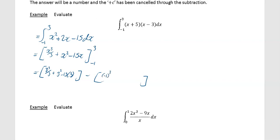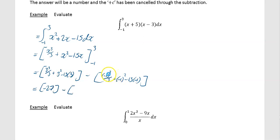So it's minus 1 cubed over 3, plus (minus 1) squared, minus 15 times (minus 1). Entering the first bracket into the calculator — 3 cubed divided by 3 plus 3 squared minus 15 times 3 — gives minus 27. For the second bracket, (minus 1) cubed over 3 plus (minus 1) squared minus 15 times (minus 1) gives 15 and two thirds. So the final answer is minus 27 minus 15 and two thirds, which gives minus 42 and two thirds.